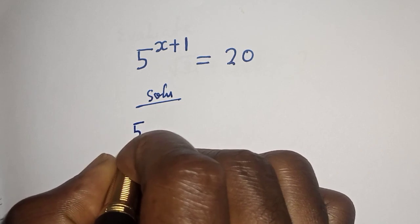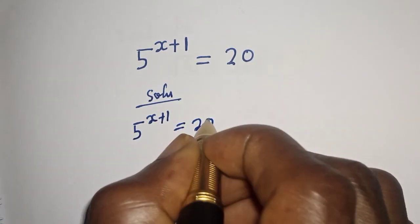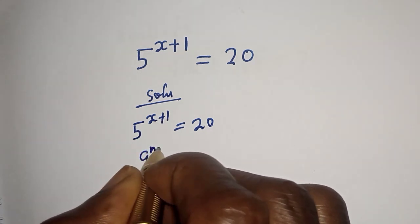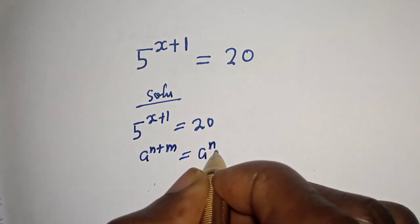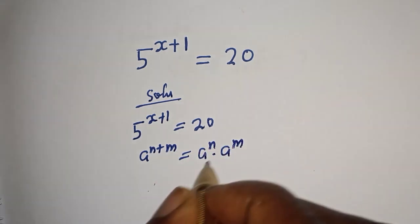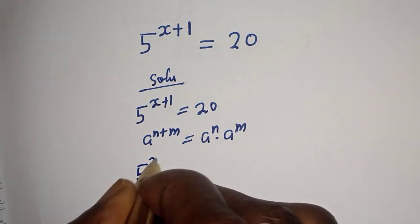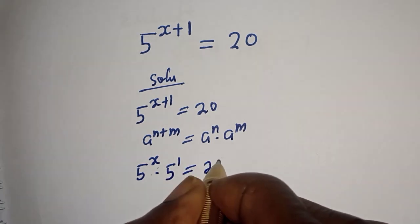We have 5 raised to power x plus 1 is equal to 20. Now, if you have a raised to power n plus m, this is equal to a raised to power n multiplied by a raised to power m. Then this can be written as 5 raised to power x multiplied by 5 raised to power 1 is equal to 20.